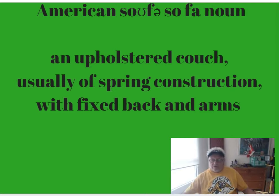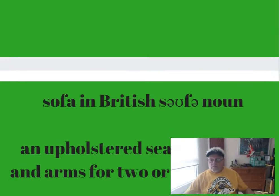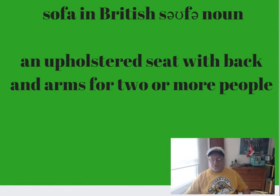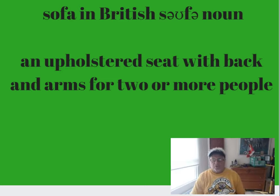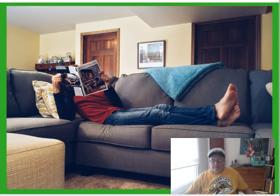The American definition of a sofa is an upholstered couch, usually of spring construction, with fixed back and arms. The upholstery and springs are significant. Now in Britain — and we're sort of allied with Britain in our language as Canadians — a sofa is an upholstered seat with a back and arms for two or more people. They don't mention spring construction, but that's the British definition.